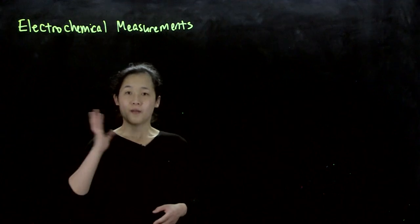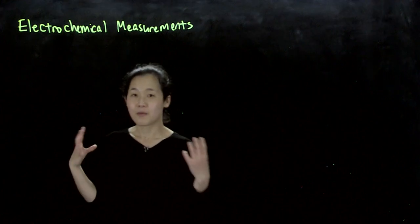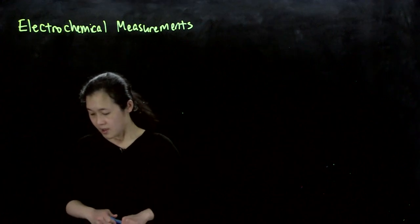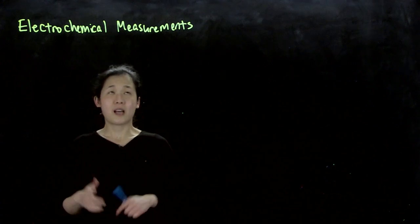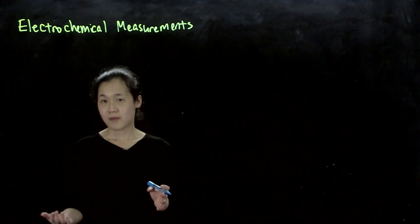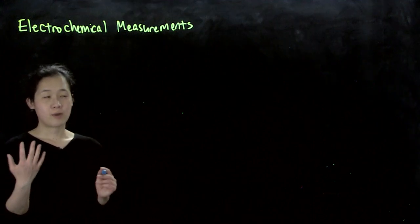So the key thing to remember for electrochemical measurements is that the Nernst equation is really the most important factor of what determines what we're measuring. Electrochemical measurements, I'm going to oversimplify it, so you'll probably learn more of it in analytical chemistry. But for our purposes, there's two major experimental types.